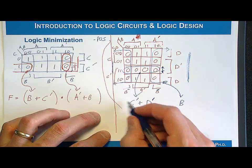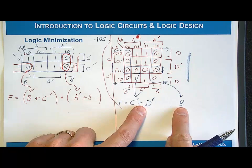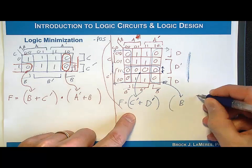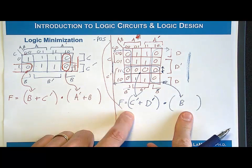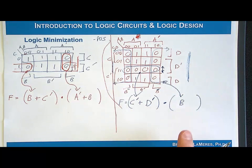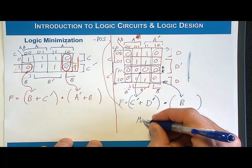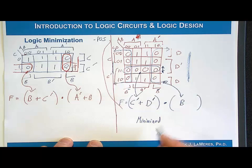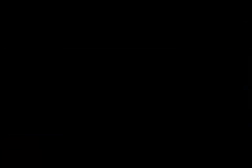Taking the two prime implicant sum terms and AND-ing them together by putting parentheses around them, the final minimized product of sums logic expression is F = (B) · (C' + D'), which is the minimized logic expression in product of sums form.